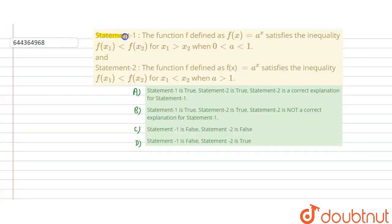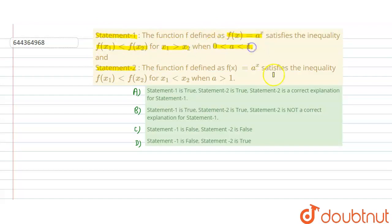Hello students. The problem has Statement 1 and Statement 2 given. The first statement says the function defined as f(x) is equal to a raised to power x, and f(x1) is less than f(x2) when x1 is greater than x2, where a lies between 0 to 1.